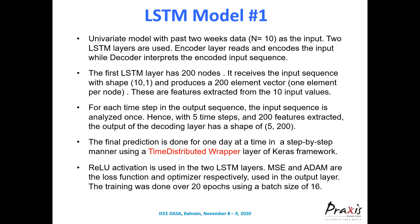The LSTM Model 1 is a univariate encoder-decoder LSTM with two weeks of prior data as input. Two LSTM layers are used — an encoder layer that encodes and a decoder layer that decodes. The first LSTM layer has 200 nodes; it receives an input sequence of shape (10, 1) and produces a 200-element feature vector. Final prediction is made one day at a time using a TimeDistributed wrapper from Keras. ReLU activation is used in both LSTMs, with Adam as optimizer. Training runs over 20 epochs with a batch size of 16.